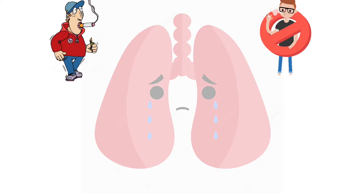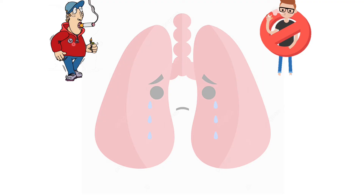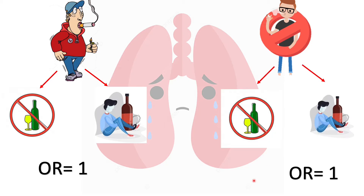When we divided the subjects into smokers and non-smokers and asked the smokers alone about their past alcohol consumption, we found no difference. The difference is eliminated when we stratify by the confounder. Smoking is the true risk factor. Of course, there are more cases of lung cancer in smokers than in non-smokers, but alcohol has really nothing to do with lung cancer.